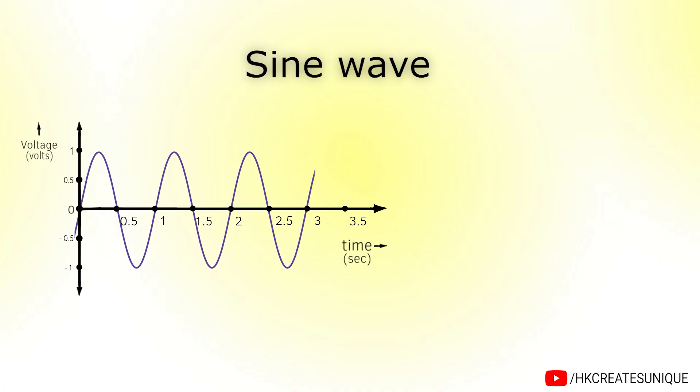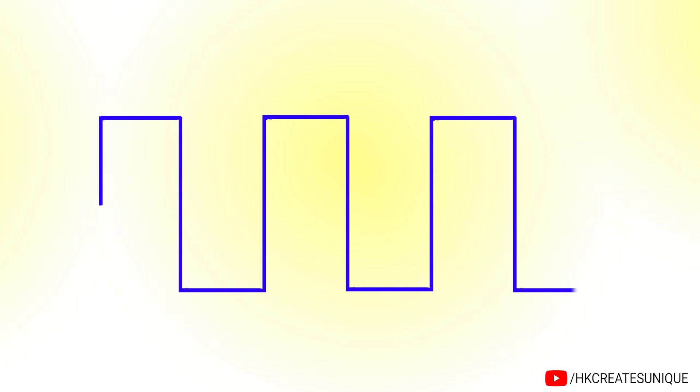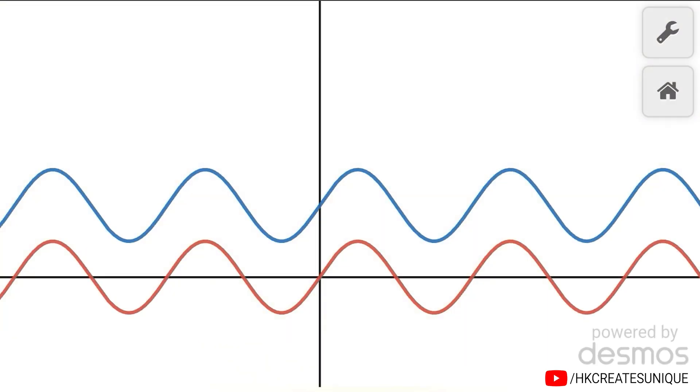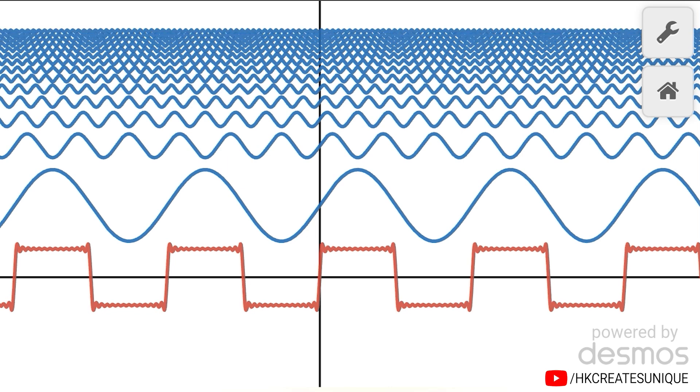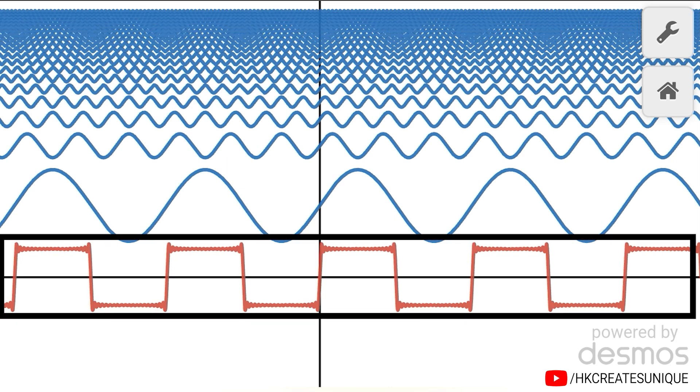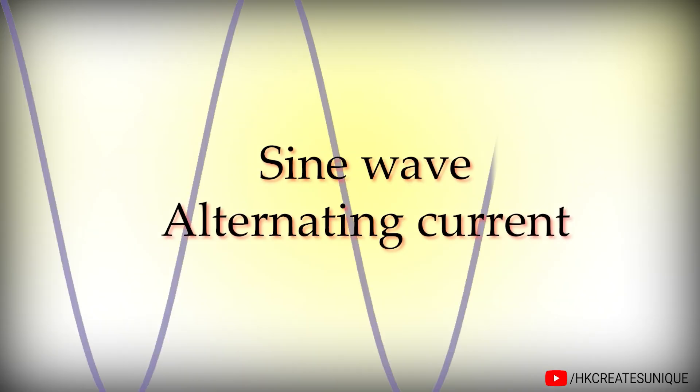In fact, all other waveforms such as square wave can be resolved into infinite sine waves of different amplitude and frequencies. When added together, the original waveform is produced.